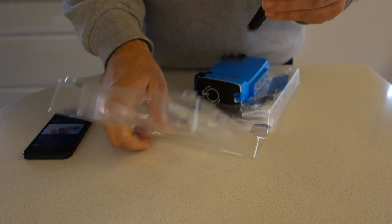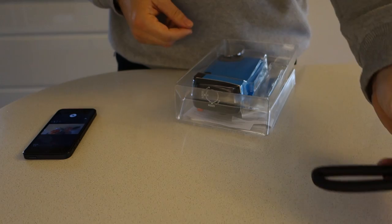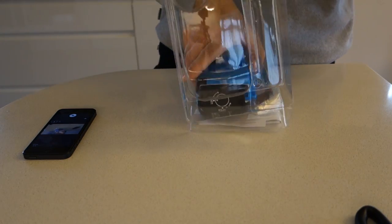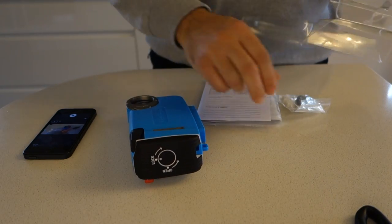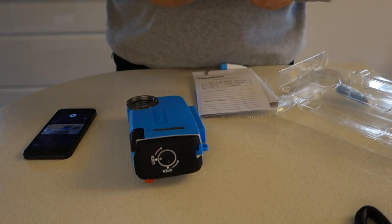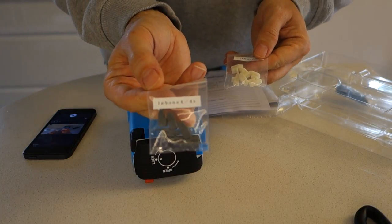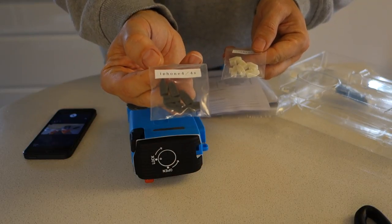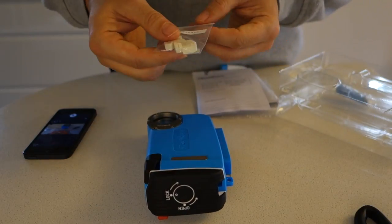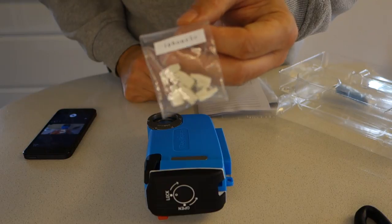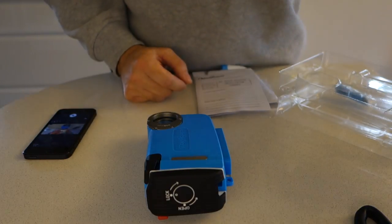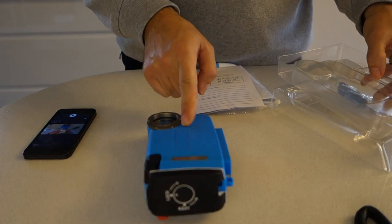In the box, find lanyard, the housing itself (this case is blue), set of spacers. You can see here this is for the iPhone 4 and 4s, and this one is the one for the iPhone 5c.